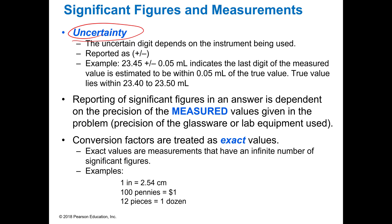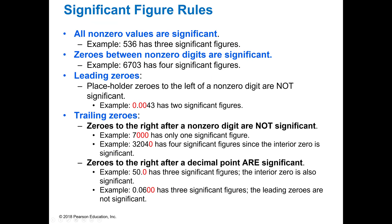One thing to remember is we have something called equalities, and those are the things that allow us to go from one unit to another. So we know that there are 2.54 centimeters in one inch; when we use those, we consider those to have unlimited significant figures. When you count something, that also has an unlimited number of significant figures. It's only when we measure something that it's going to have a finite number of significant figures.